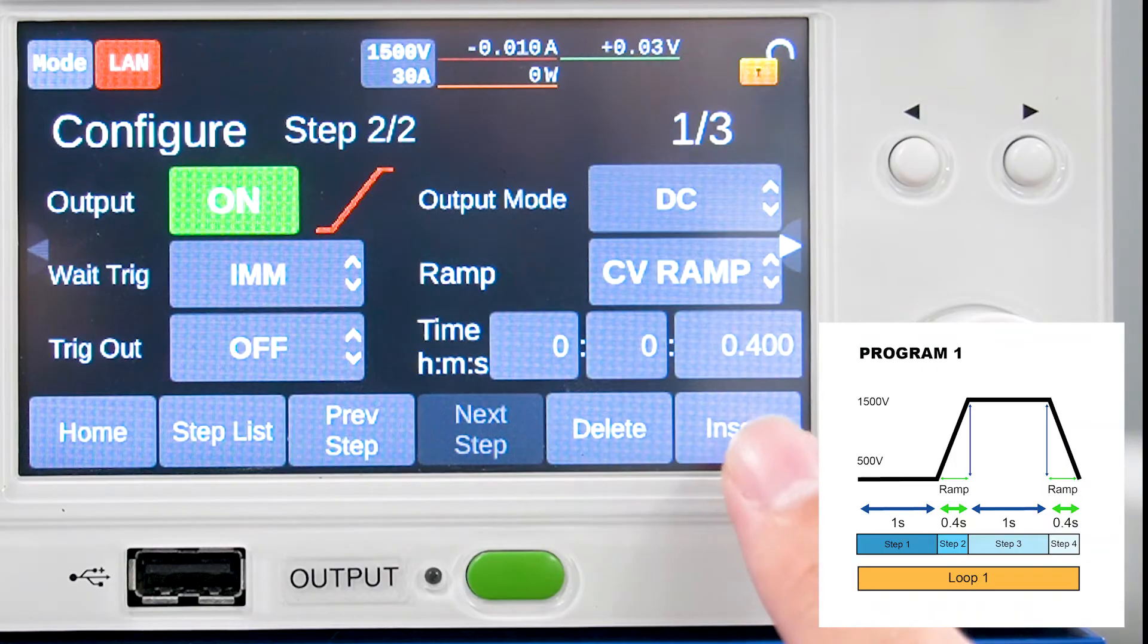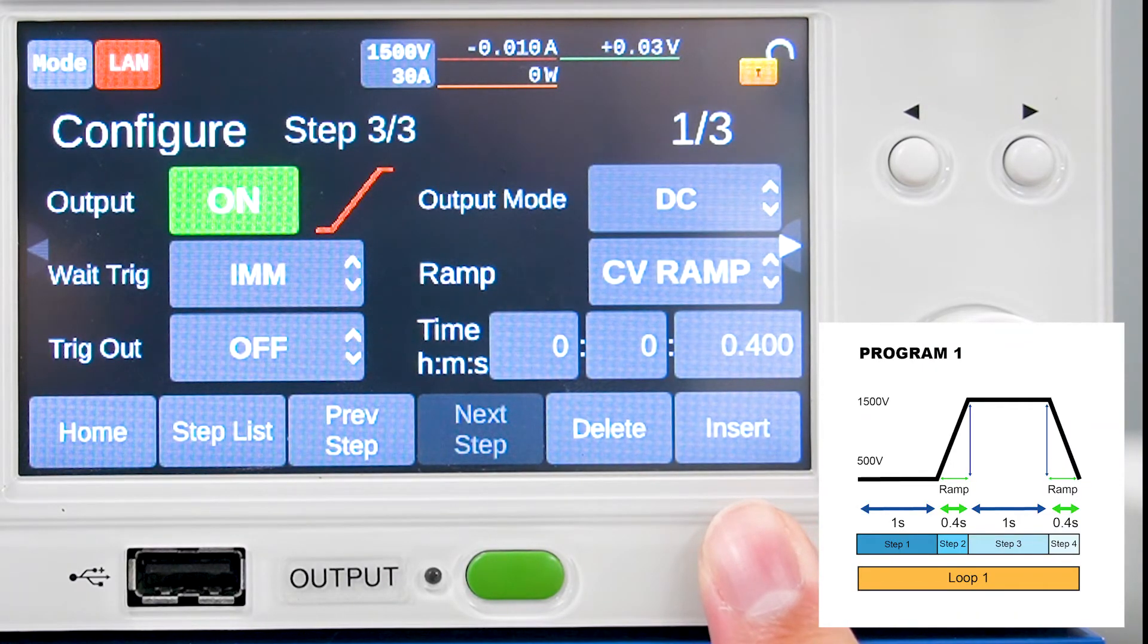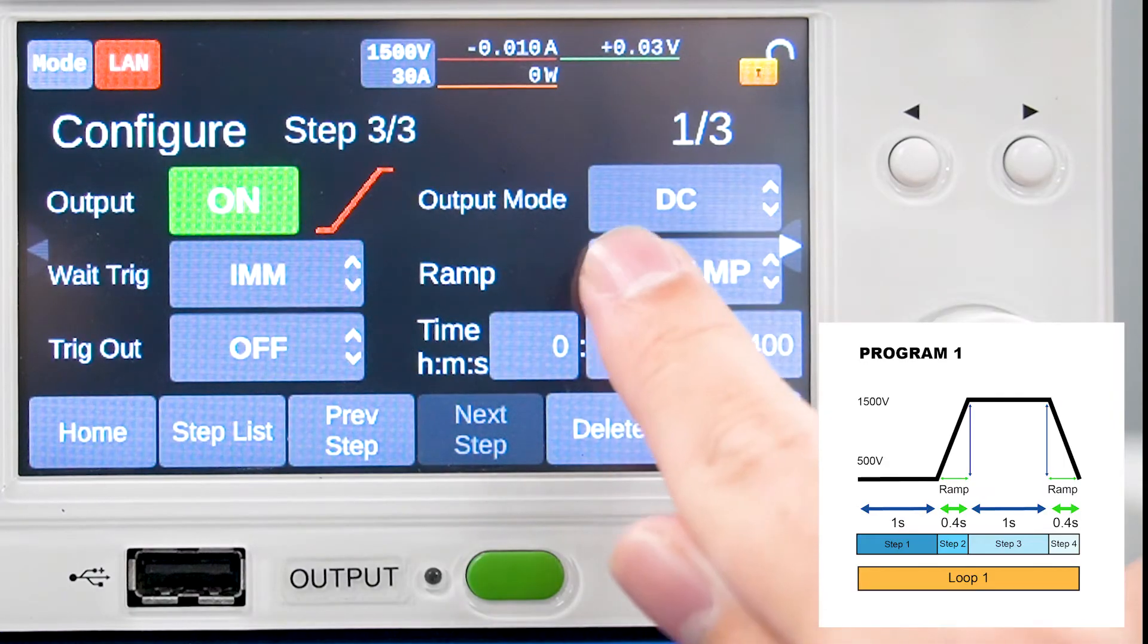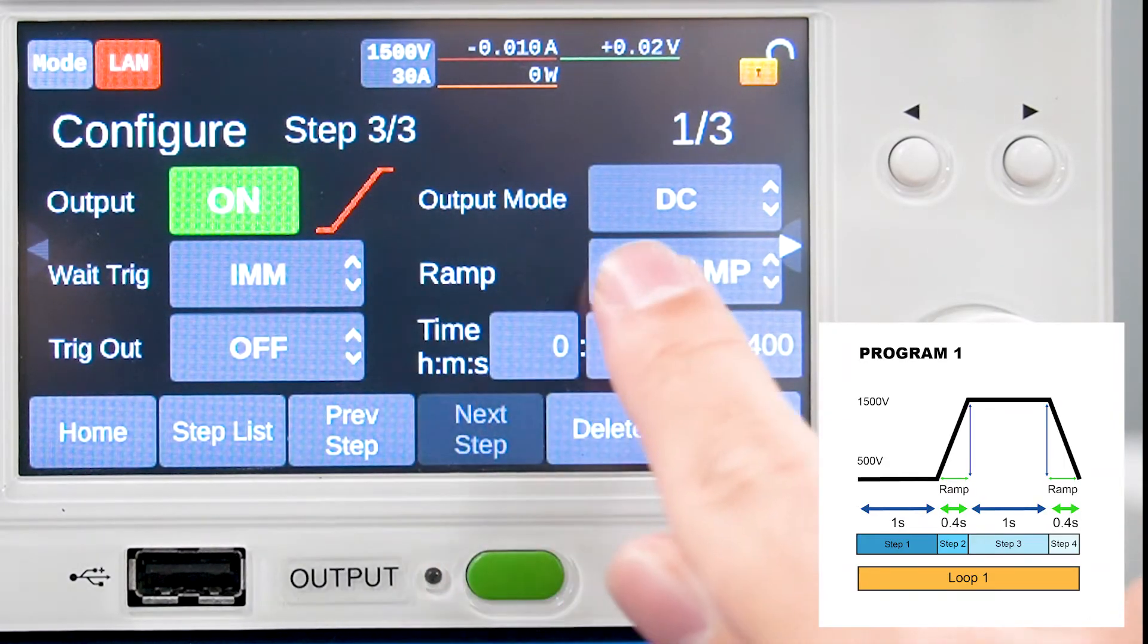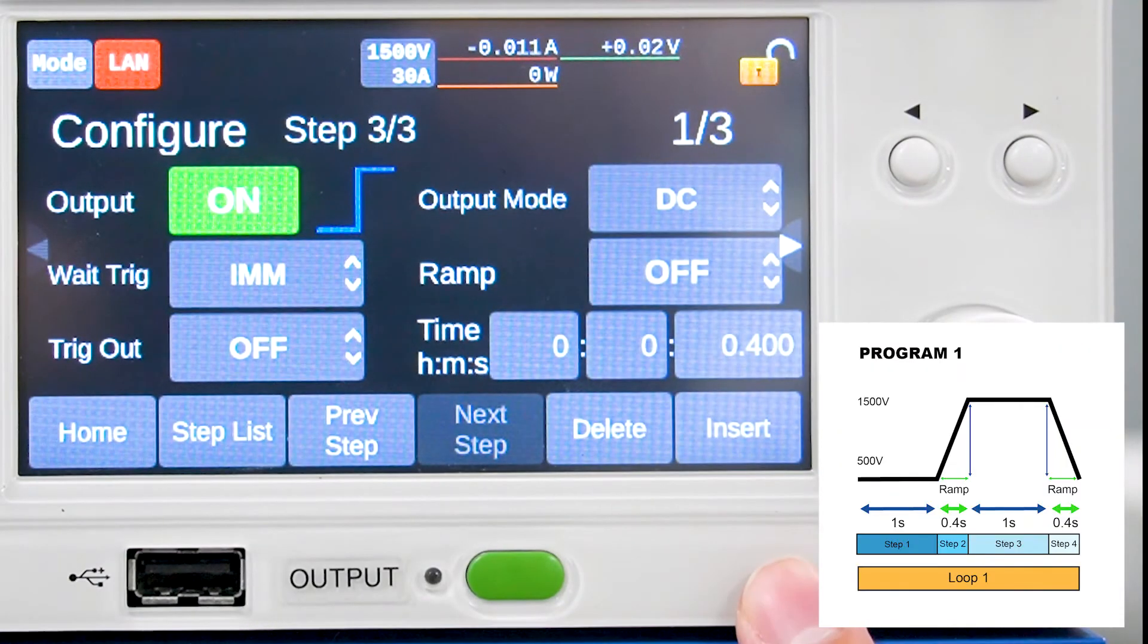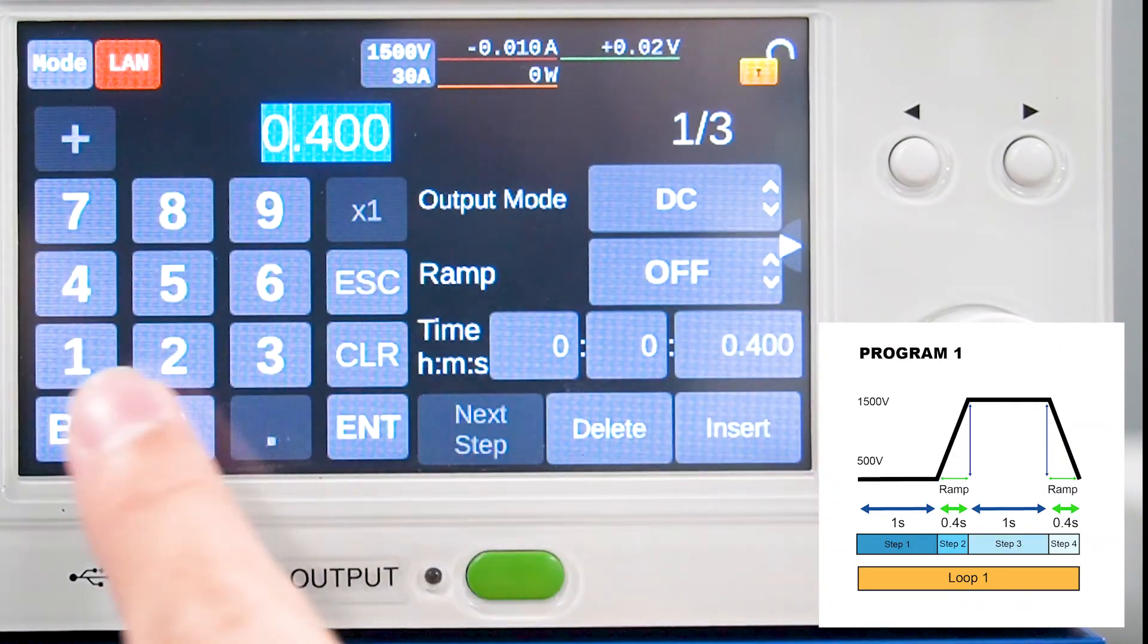Press insert to edit step 3. Now, we'll edit step 3. Turn off the ramp settings and change the time to 1 second.